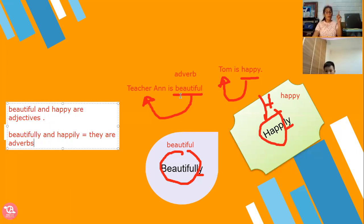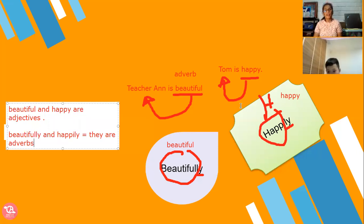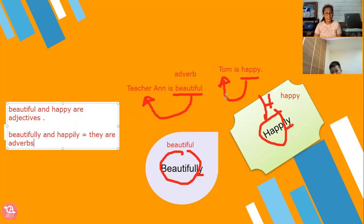Example adjective: Teacher Ann is beautiful. Who is beautiful? Teacher Ann. Who is happy? Tom. So you understand now what is adjective. Do you understand? Yeah. Very good. That's my boy.